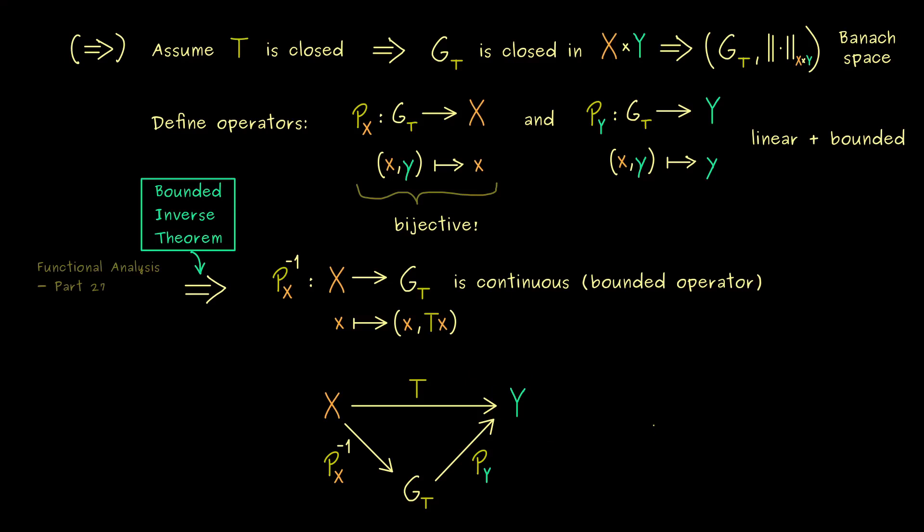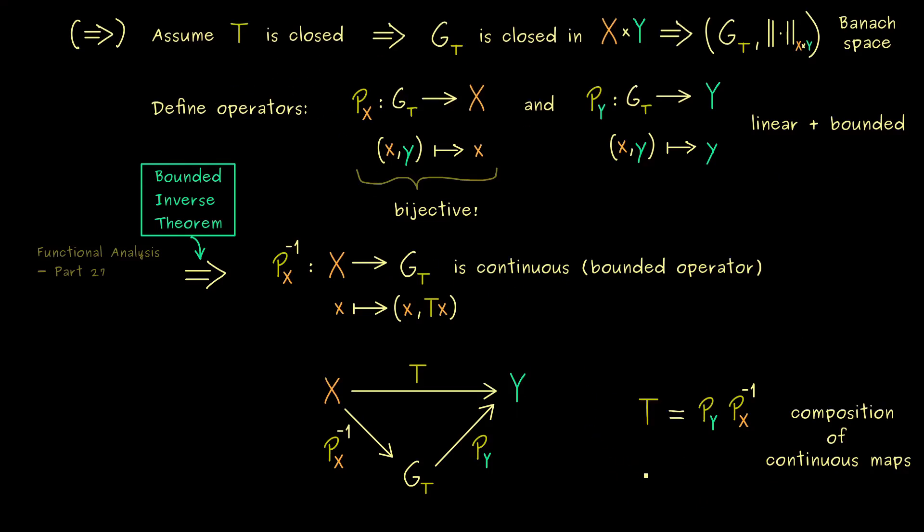So the picture is correct and we can write T as a composition. So it's p_Y after p_X inverse. And usually for linear maps we don't write a composition symbol. But nevertheless it's a composition of continuous maps. And therefore the result T is also a continuous map.